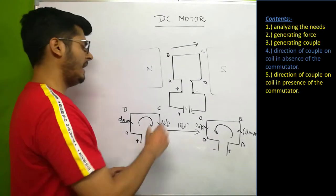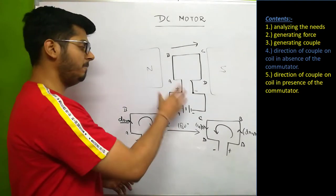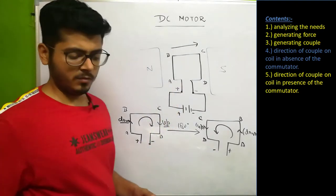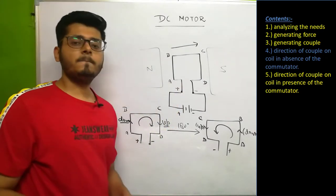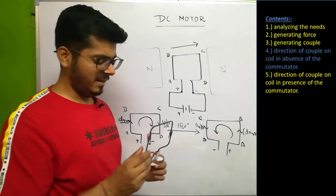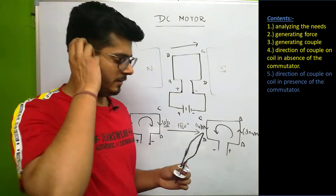This arrangement of permanently joining the ends of the coil with the battery will never work because the direction of current switches and becomes alternating, so the direction of couple is also switching. We need something that can avoid the change in direction of current — and that is called the split ring arrangement.